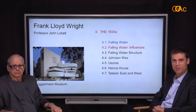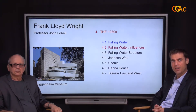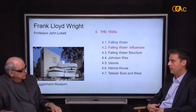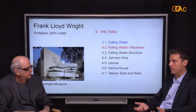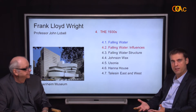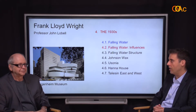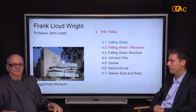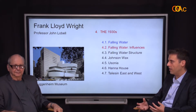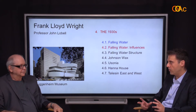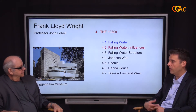Hello and welcome to our second lecture on Fallingwater by Frank Lloyd Wright. In the earlier lecture we saw the actual design, the space inside and the major architectural characteristics of the project. In this second lecture we'll discuss the origin of the project — where it comes from, how it was designed, the actual process, the inspiration for it, and the influences.